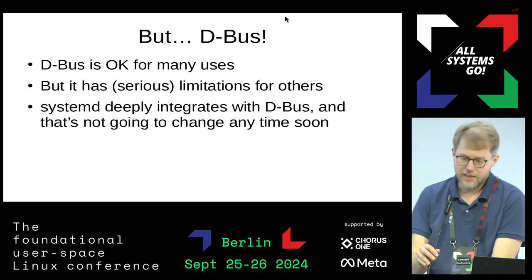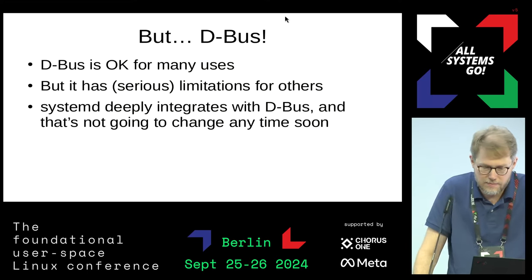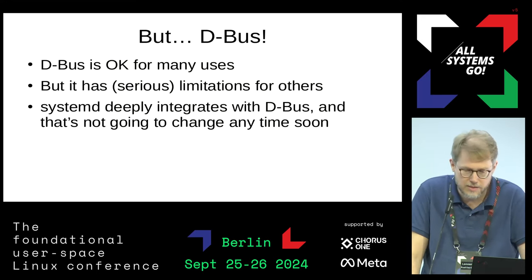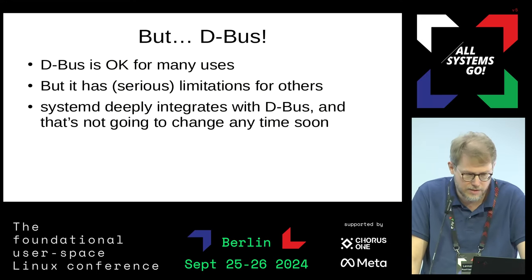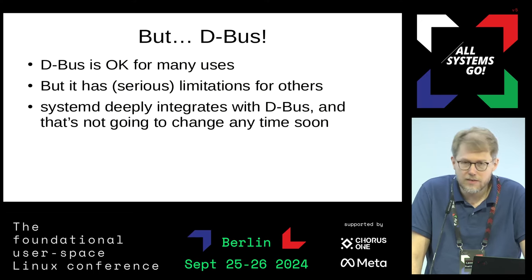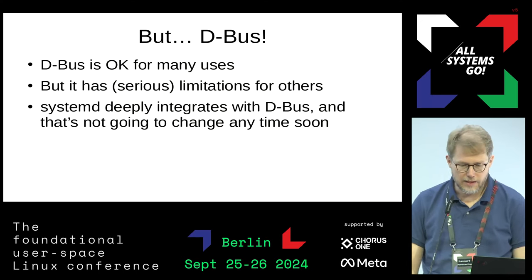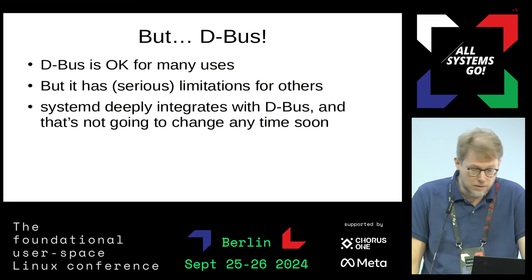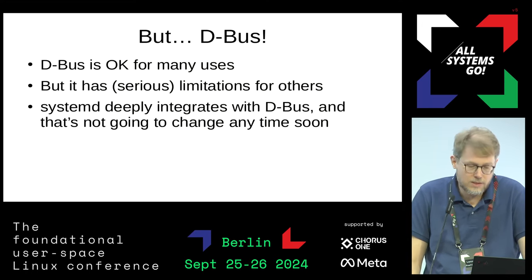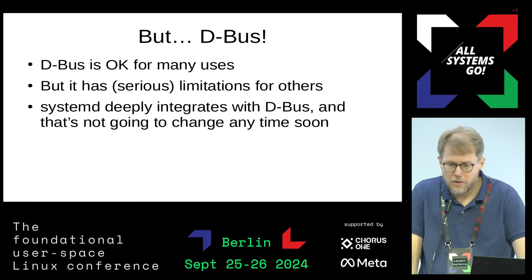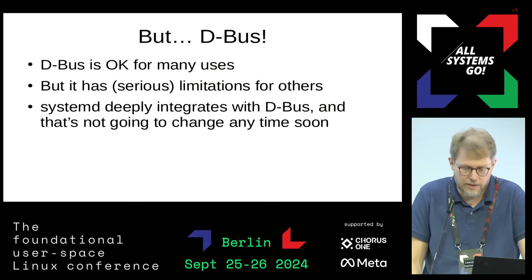Right now, everything on Linux that does low-level system stuff has relied on DBus. There are some areas where it's not used, but it's kind of universal for a bigger system. It's okay for many users, but it has some serious limitations for others. These limitations became visible already in the beginning when we started doing systemd. Systemd deeply integrates with DBus, and that's not going to change anytime soon, but it's always pain in some areas.